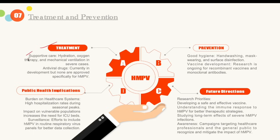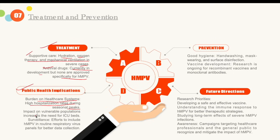Treatment options include supportive care — hydration, oxygen therapy, and mechanical ventilation in severe cases. Antiviral drugs are currently in development but none are approved specifically for HMPV. Steroids and bronchodilators can be used for symptomatic treatment. Public health implications include burden on healthcare systems with high hospitalization rates during seasonal peaks and increased need for ICU beds. Surveillance should include HMPV in routine respiratory virus panels for better data collection.